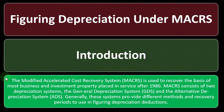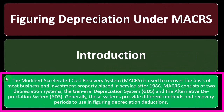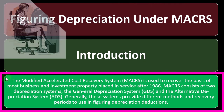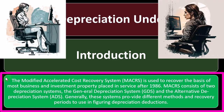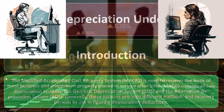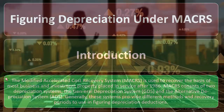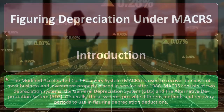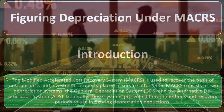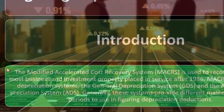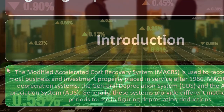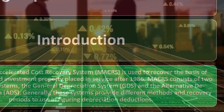Introduction: the Modified Accelerated Cost Recovery System — MACRS — is the main depreciation system you'll deal with for taxes. It is used to recover the basis of most business and investment property placed in service after 1986. MACRS consists of two depreciation systems: the General Depreciation System (GDS) and the Alternative Depreciation System (ADS). These systems provide different methods and recovery periods to use in figuring depreciation deductions.